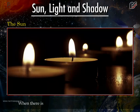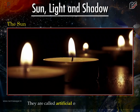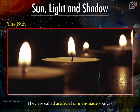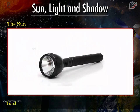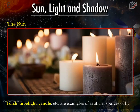When there is no sun, we use some other sources of light. They are called artificial or man-made sources. Torch, tube light, candle, etc. are examples of artificial sources of light.